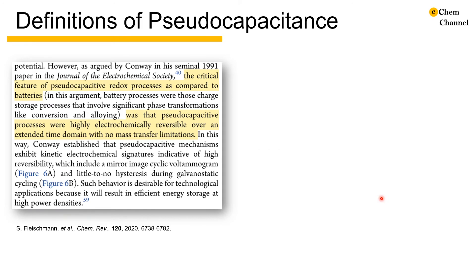Before we dive into the history, it might be beneficial to talk about the definition of pseudocapacitance. This is still something under debate. However, we present here the definition from a recent Chemical Review paper by Fleischmann and colleagues. Essentially, it states that pseudocapacitance is a differential capacitance that characterizes highly electrochemically reversible redox processes with no mass transfer limitations when tested over an extended time domain.